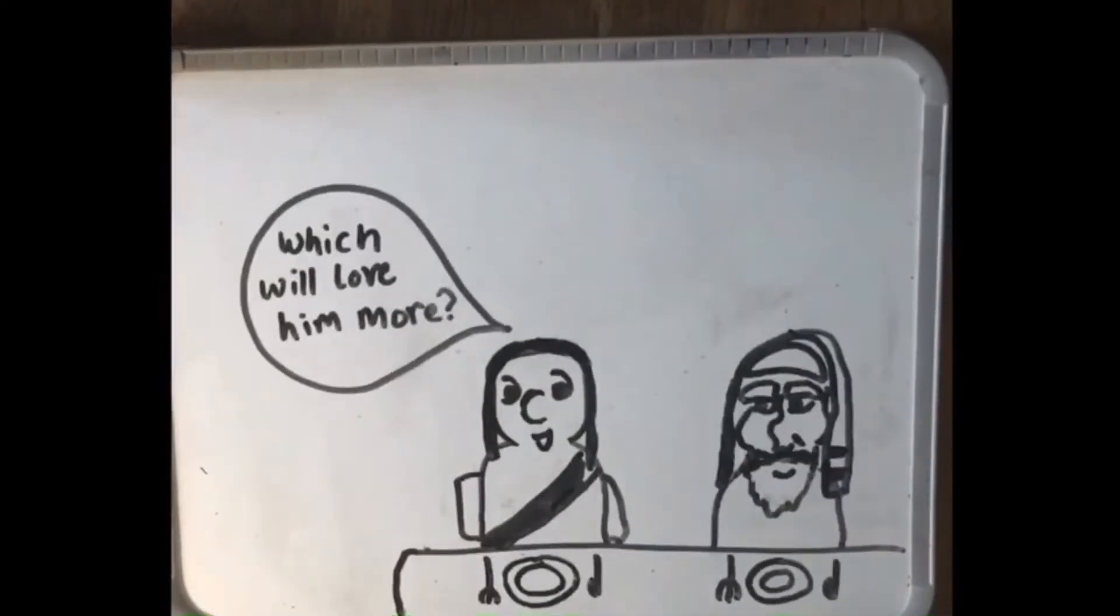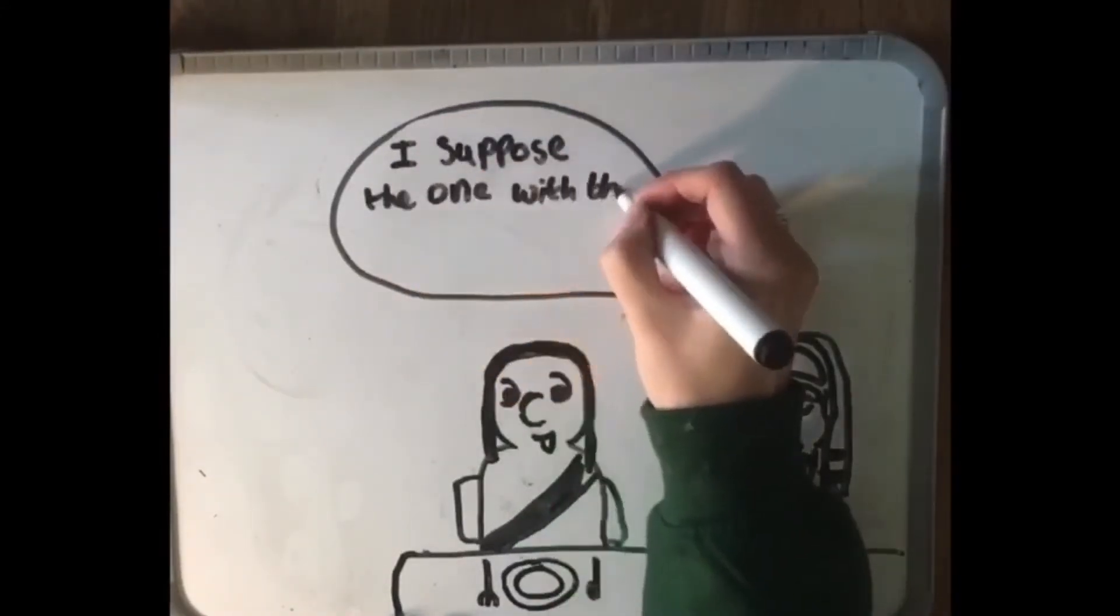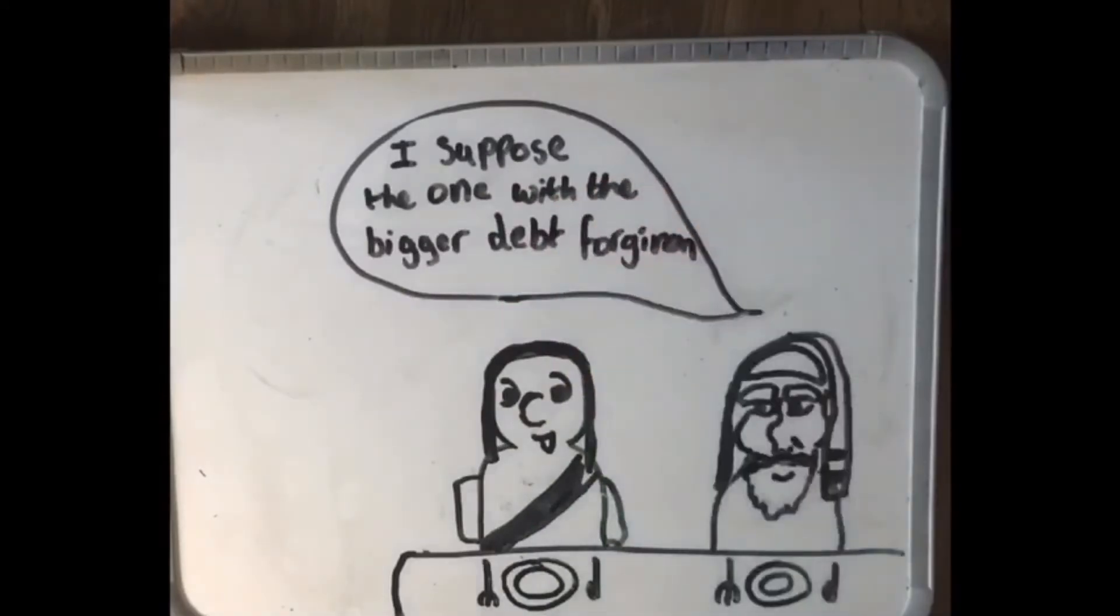Now, which of them will love him more? Simon replied, I suppose the one who had the bigger debt forgiven.